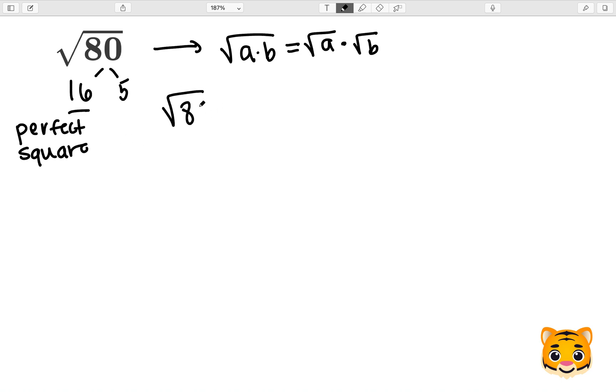Now we can rewrite the square root of 80 as the square root of 16 times 5, which we can then use our math rule to rewrite as the square root of 16 times the square root of 5.